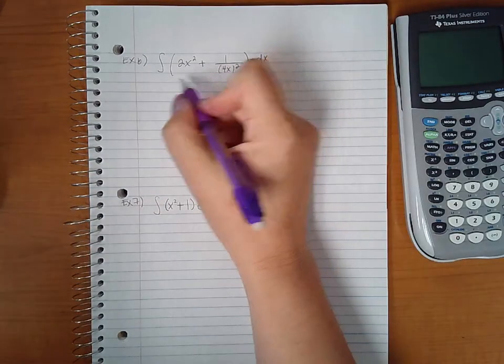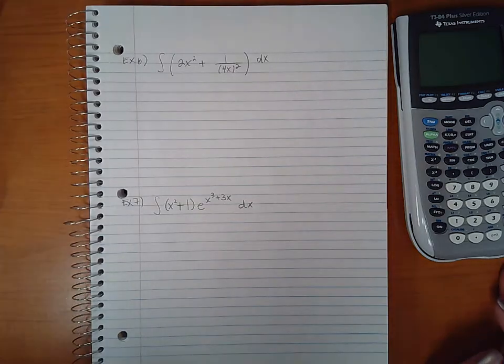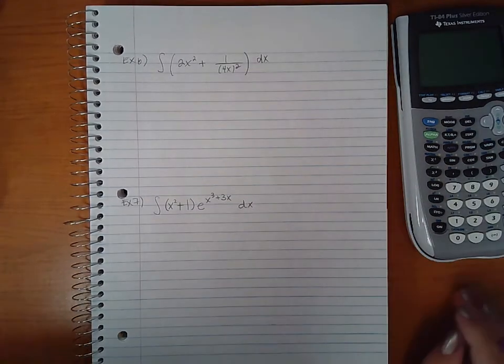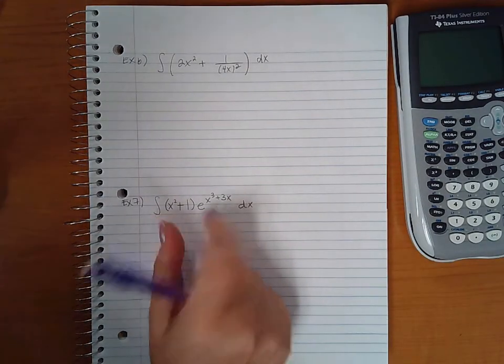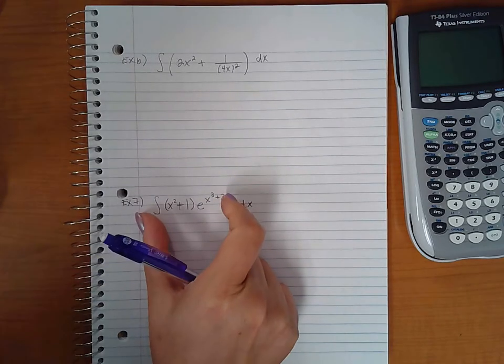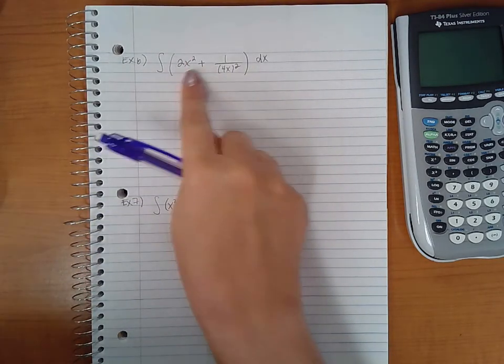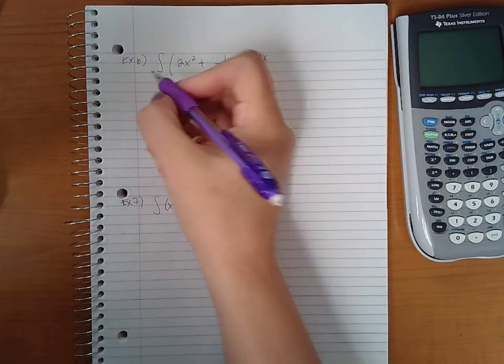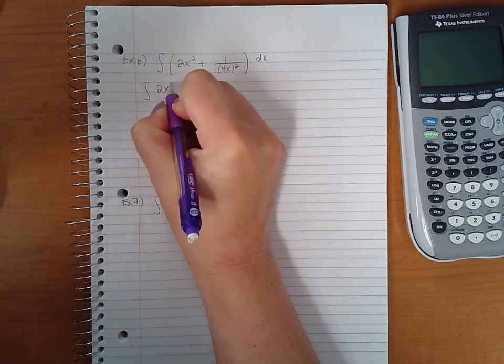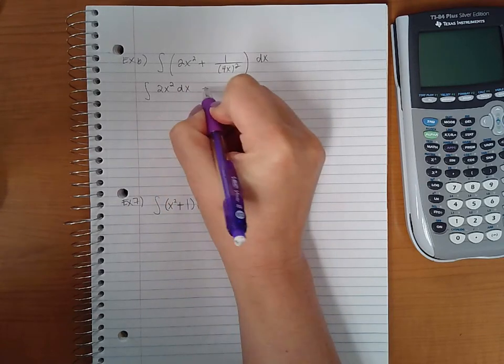First of all, there's two terms here, which is a little bit different than what we've seen so far. It's usually just been one term, like for instance this - it's all multiplied together so it's just one term. But here we've got a plus sign in between everything, so we do have two terms, so we can integrate each term individually like this.